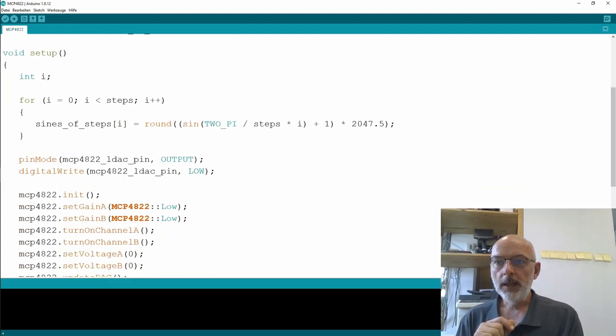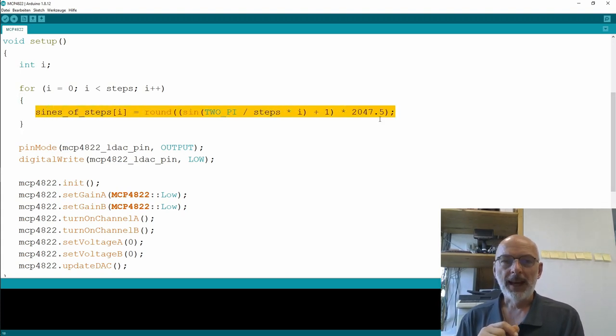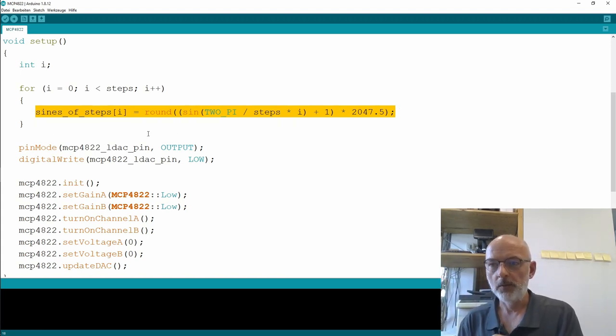I initialize my object MCP4822. And the only argument here is the chip select pin. You have to take care of that load DAC pin yourself. And in the setup, I calculate the sine values here. And it's basically the same as in the last video where I used the PWM output. You can refer to that video if you want to know details.